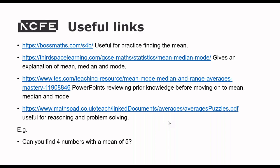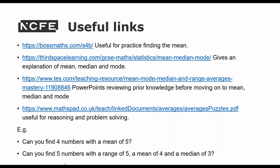As an example from MathsPad, there are questions like: can you find four numbers with a mean of five? Your faster learners will quickly realise that any four numbers adding up to 20 give a mean of five. A slightly more difficult question: can you find five numbers with a range of five, a mean of four, and a median of three? Pause the recording and see if you can think of an answer — there are a few — and think about how that might help your learners.